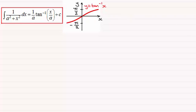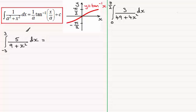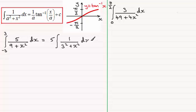I'll give you a couple of examples. For this first one, we've got the integral of 5 all divided by 9 plus x squared with respect to x, between the limits x equals minus 3 and x equals 3. This can be changed into standard form very easily if we pull out the 5 in front of the integral, since it's a constant. Then we can think of the 9 as 3 squared, so we have 1 divided by 3 squared plus x squared, integrated between minus 3 and 3.